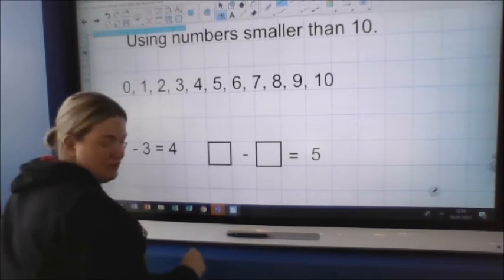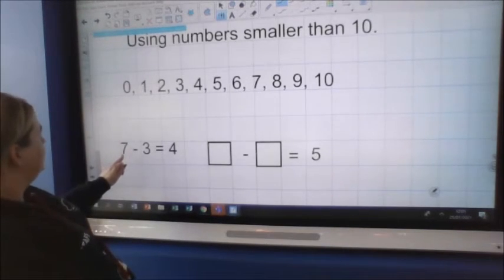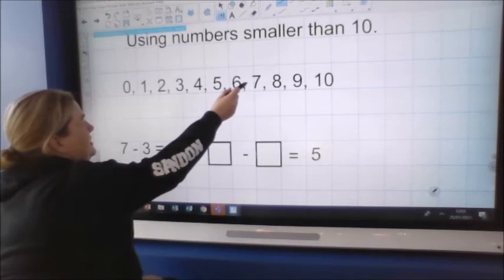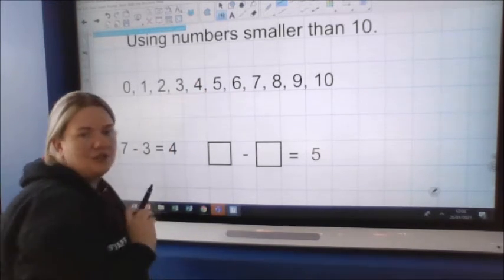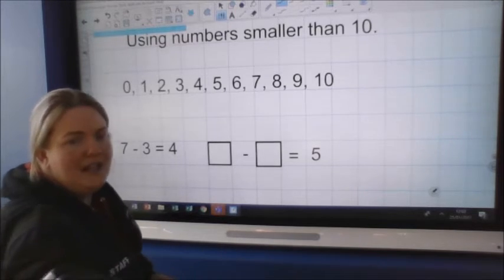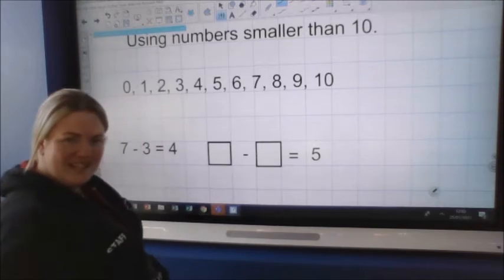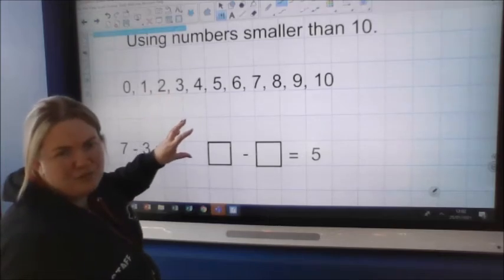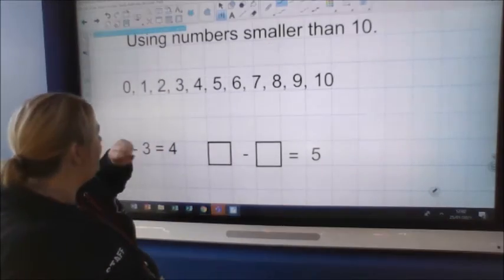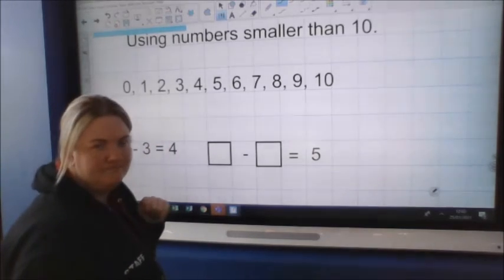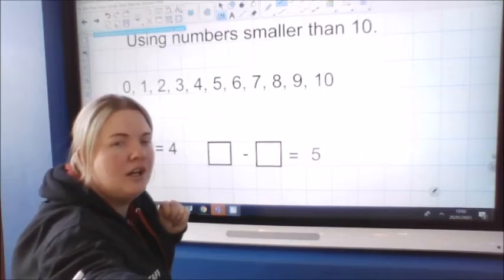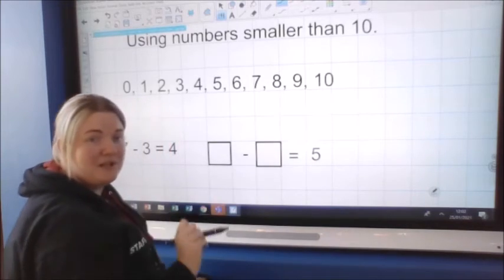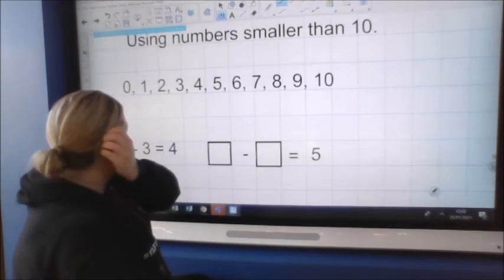So this one has been done for us. Seven take away three equals four. So we've got seven take away three. One, two, three. And I know I end up on four. So now I've got two boxes that are empty here. And I need to take a number sentence up, a subtraction number sentence up. So can I start with one? No, I can't. I can't start with one because I need to start with a larger number than five, because five's our answer.